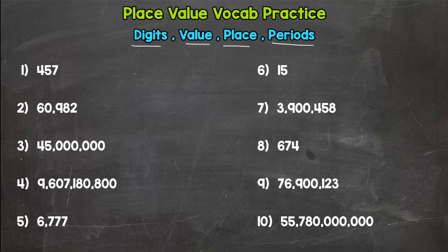All right, your goal should be either eight, nine, or ten correct out of ten. If you're lower than that, you probably need to go back and review these words. All right, so let's hop into number one. So we have 457. Our first question is what digit is in the tens place? What digit?